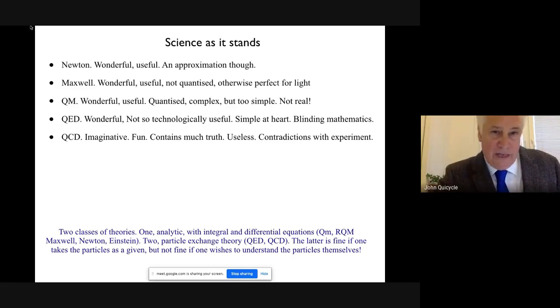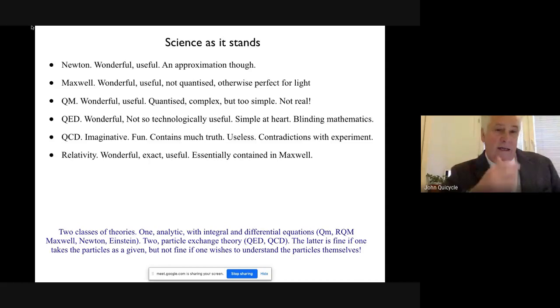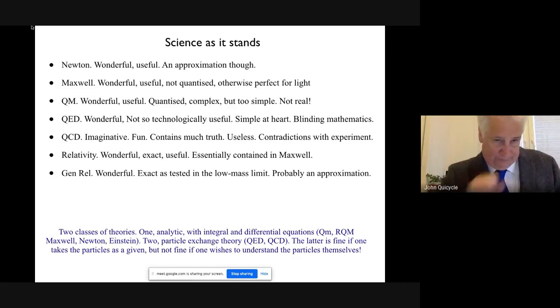I'm not going to go too far into QCD here, because it's something which has a very large number of parameters which describe it. So I'm going to leave QCD aside. It's not one of the things that I'm going to try and reproduce in terms of just space-time and root energy. Then there are some other theories which I hadn't included at the beginning. Relativity is one of them. Relativity is, again, wonderful, exact, very useful, but it's essentially contained within the Maxwell theory, which predates it in many ways, as I'll show later in this series.